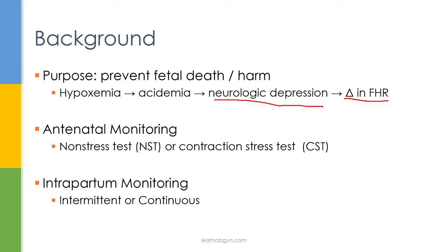Fetal heart rate monitoring can be done during pregnancy — antenatally — or during labor — intrapartum. Antenatal monitoring includes non-stress tests (NSTs) or contraction stress tests (CSTs). When monitoring someone in labor, it can be intermittent — for example, monitoring for 20 minutes, waiting an hour, then monitoring again — or it can be continuous. We choose between intermittent and continuous depending on the patient's specific maternal or fetal conditions.